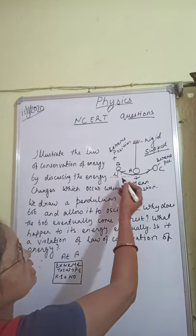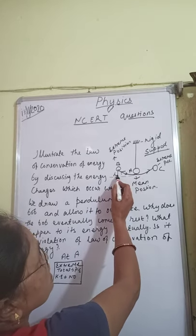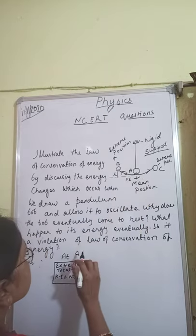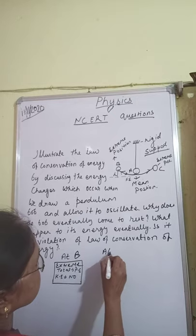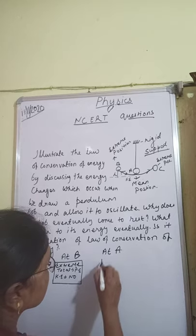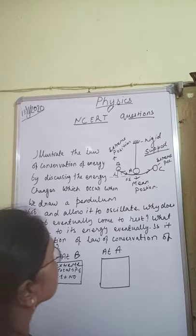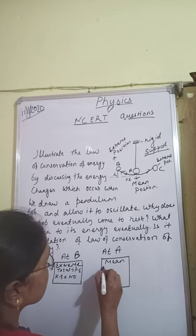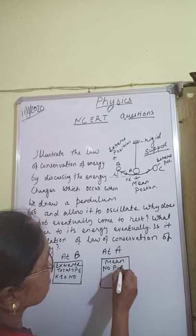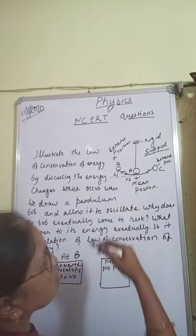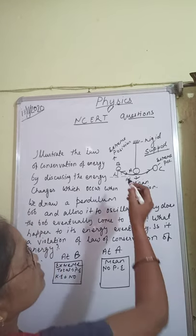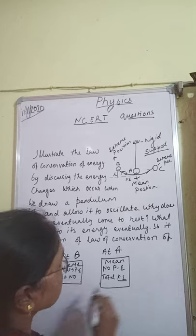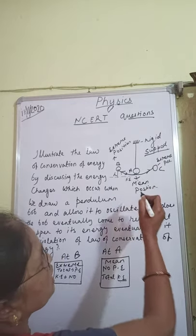As the bob starts moving backward from extreme position B, slowly the potential energy changes into kinetic energy. When it comes to position A, the mean position, there is no height, so there is no potential energy. All the potential energy has changed into kinetic energy at the mean position.